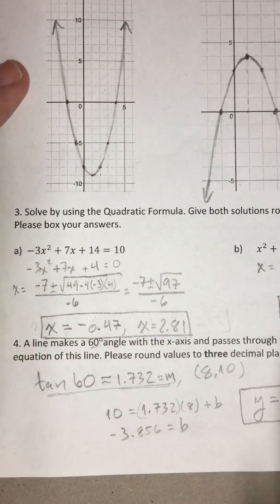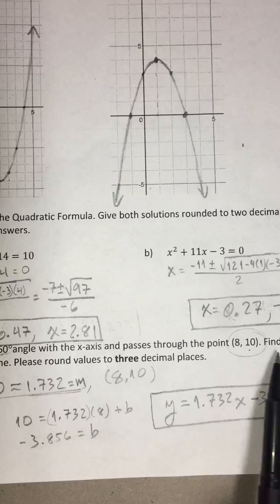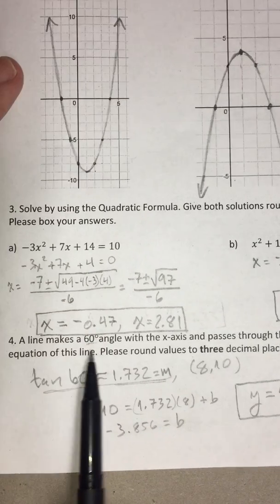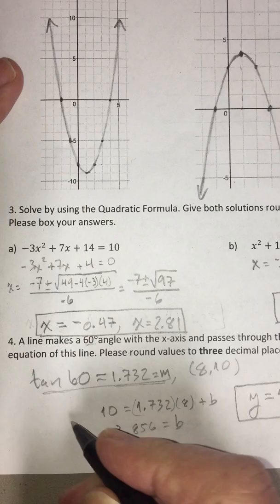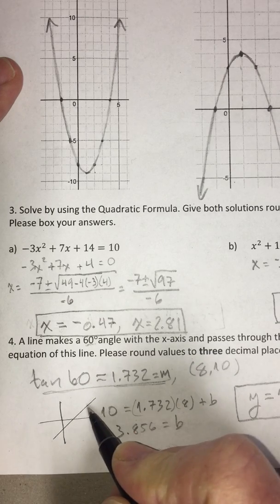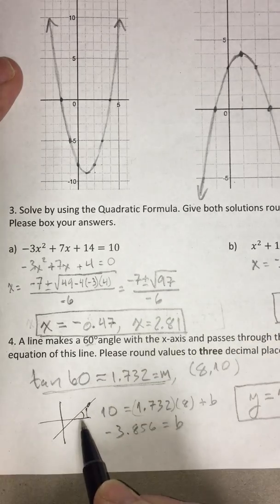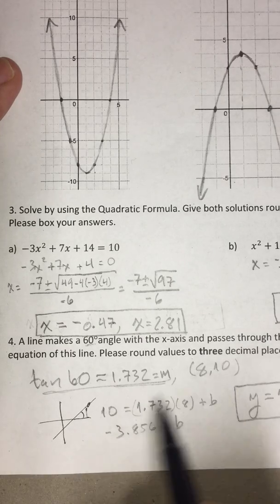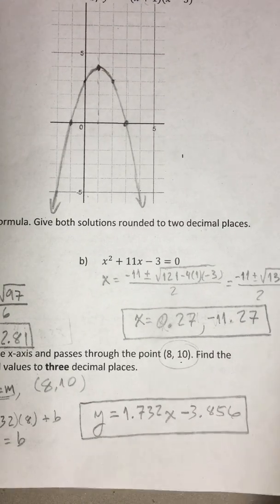This tangent problem says a line makes a 60 degree angle with the x-axis and passes through the point 8, 10. You're supposed to find the equation of this line. The tangent of an angle is the same thing as the slope of the line that makes that angle. When we have a 60 degree angle, all you have to do is take the tangent of that and that is the slope of the line. The tangent of the angle is the same thing as the slope of the line. That value is about 1.732, there's our slope. If I put in the coordinates of this point for y and x and work out what b is, there's my equation.